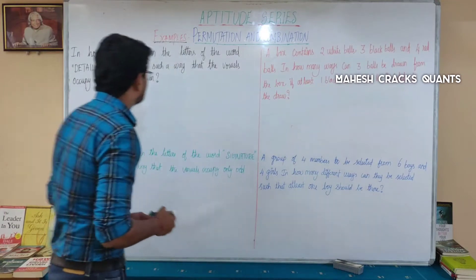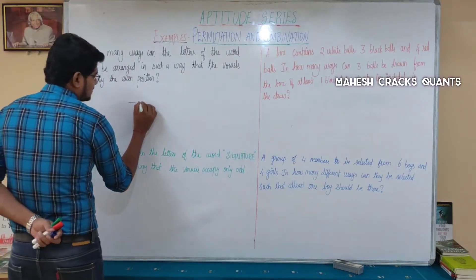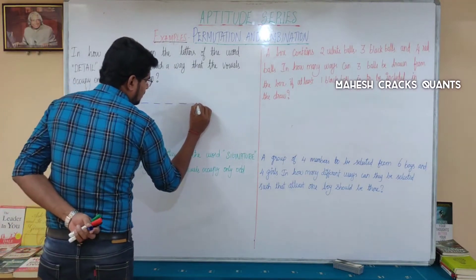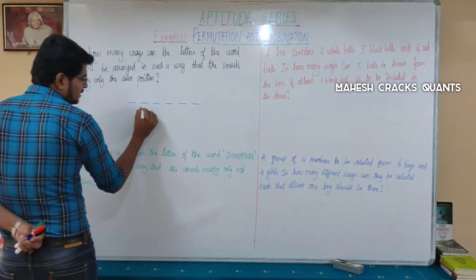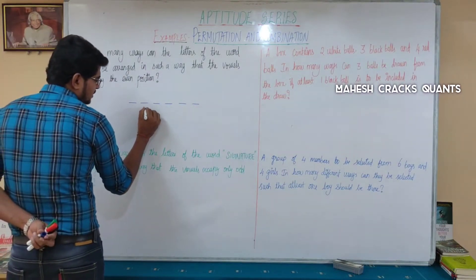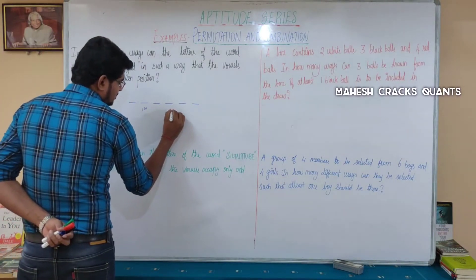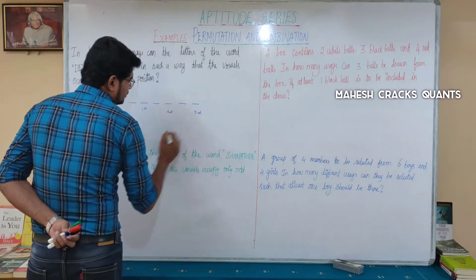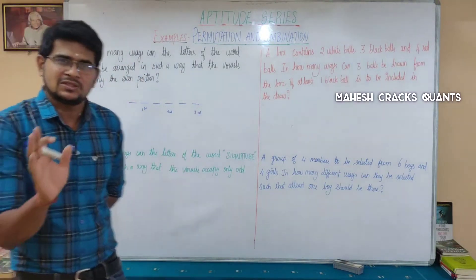First, there are a total of six letters. So the even positions are: first even position, second even position, third even position. Totally three even positions are there.